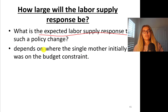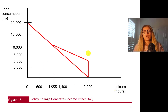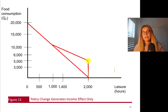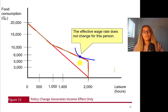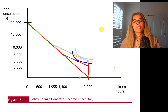It depends on where the single mother initially was on the budget constraint. If she earned less than $6,000 per year, the policy change involves only an income effect, not a substitution effect. So here is the new budget line with the TANF program. The red solid straight line is when we have no benefits and no programs. If the benefit guarantee goes down to $3,000, a mother who works very little — taking very high leisure — sees that the effective wage rate doesn't change. She just moves to a lower budget line that is parallel. So it's a parallel shift — this is pure income effect.